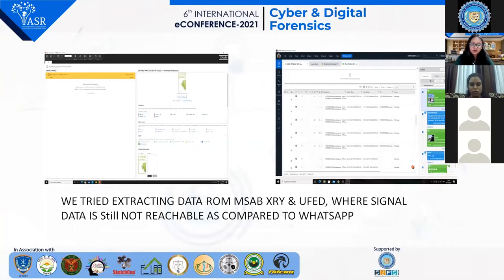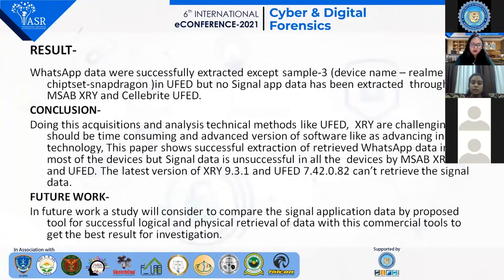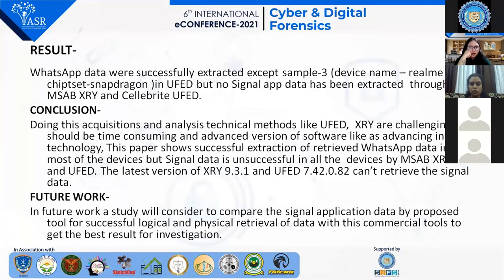These are the snapshots of my research work. The result: WhatsApp data was successfully extracted except for sample number three, which is the Realme 2 Pro with Snapdragon chipset, only in UFED. But no Signal data was extracted from either MSAB XRY or Cellebrite UFED. Conclusion: this paper shows successful extraction of retrieved data of WhatsApp on most devices, but Signal data extraction was unsuccessful on all devices. Using these latest versions, this research was done up to FAB 2021, and till FAB 2021, no Signal data could be extracted by using these two forensic toolkits.